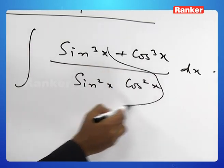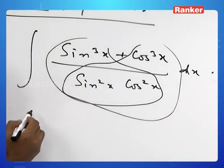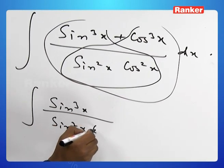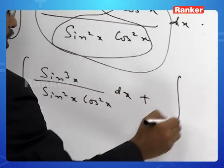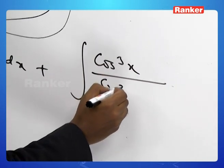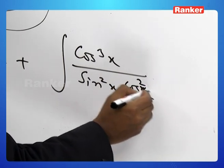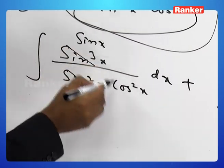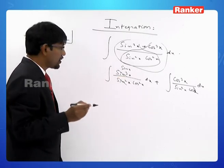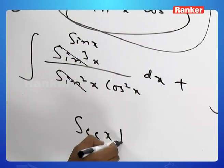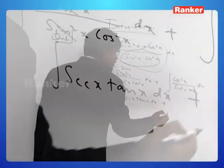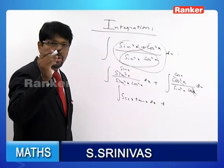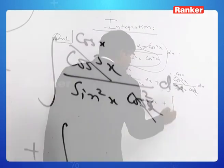Let's see how it goes. We will split the fraction into two partial fractions and integrate sin³x divided by sin²x cos²x dx, plus cos³x divided by sin²x cos²x dx. One sin²x term cancels, leaving sin x divided by cos²x. Since sin x / cos x is tan x, we get sec x tan x. For the second part, cos³x / cos²x gives cos x, and cos x / sin²x gives cot x times cosec x.